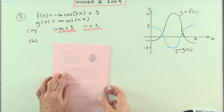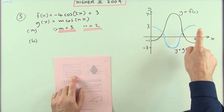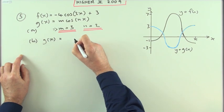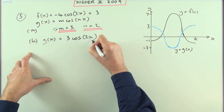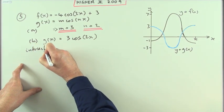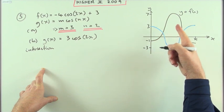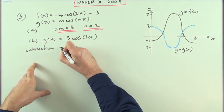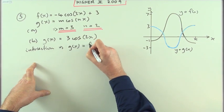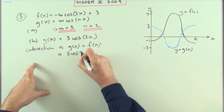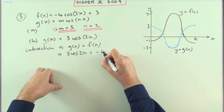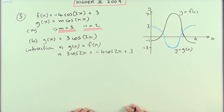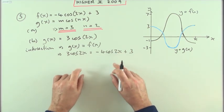That was part (a). For part (b), find correct to one decimal place the coordinates of the point of intersection. Now that I know my two equations, I'll state the second one formally: g(x) = 3cos(2x). At an intersection I can equate the two graphs. So 3cos(2x) equals negative 4cos(2x) plus 3. They both have 2x in them — it doesn't make them double angle equations because there's only one type of angle present in both terms.